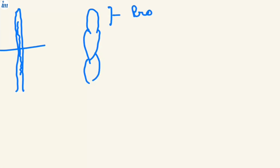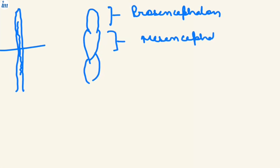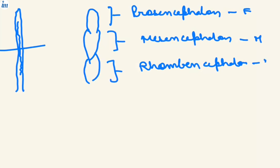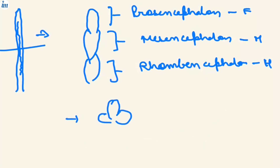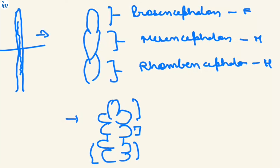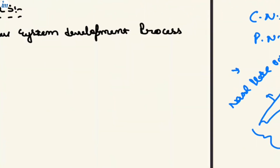The primary vesicles form: first the prosencephalon, then the mesencephalon, and then the rhombencephalon — which are our forebrain, midbrain, and hindbrain. These three primary vesicles again differentiate to form the secondary vesicles, which are five in number.